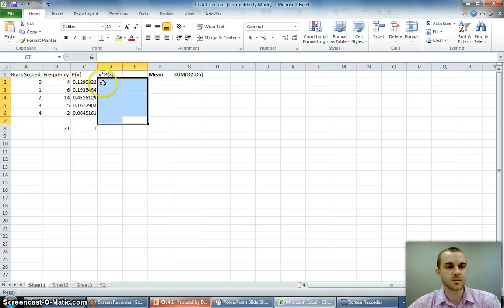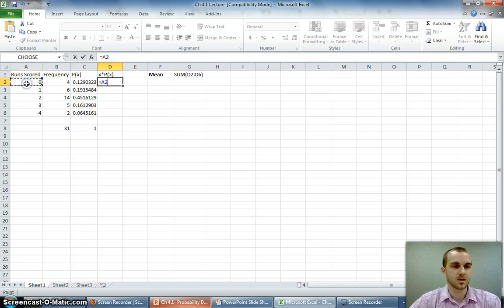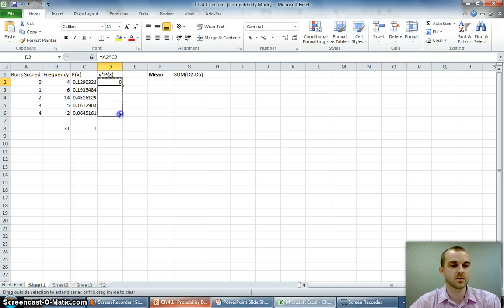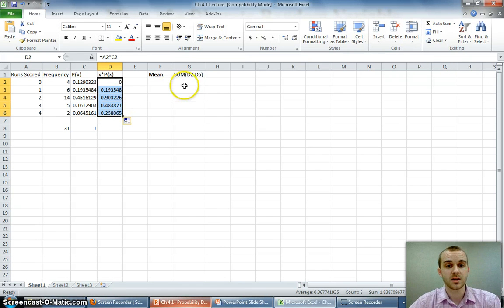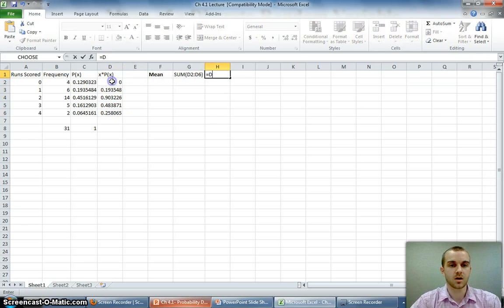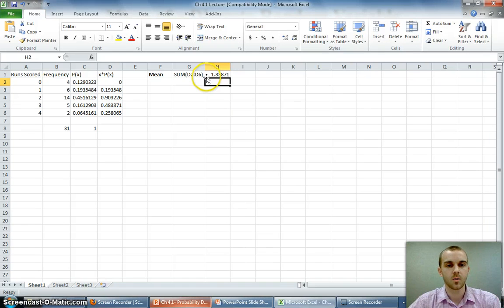If I want to find the mean, I'm going to create another column where I take the random variable and multiply it by its probability. I'm going to do that for each of the different run scored options. To get my mean, I just add up all of those values using the sum function, and I get 1.831. We could say that's about 1.84 runs scored a game.